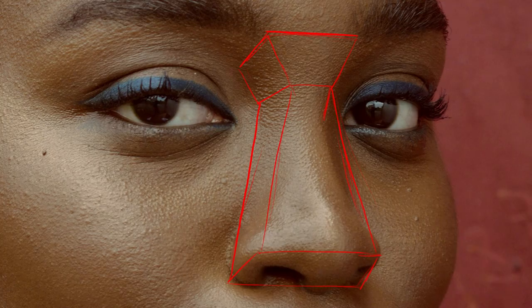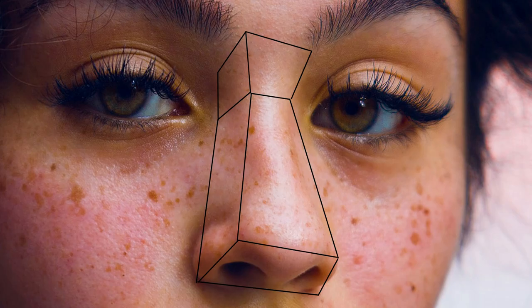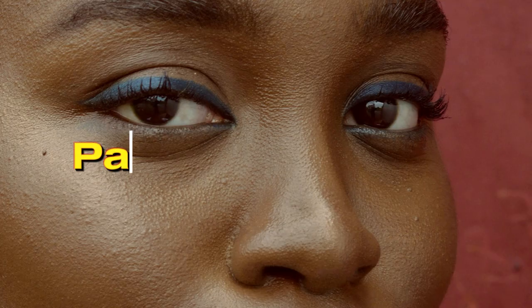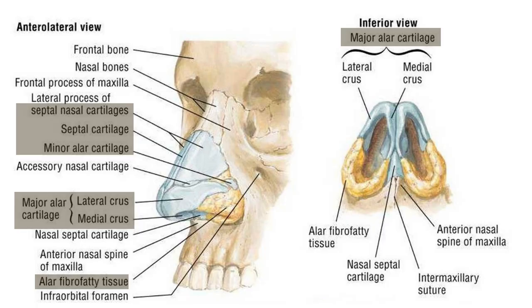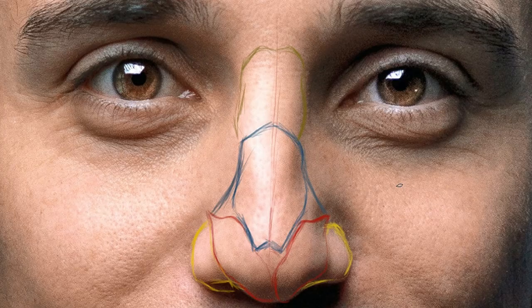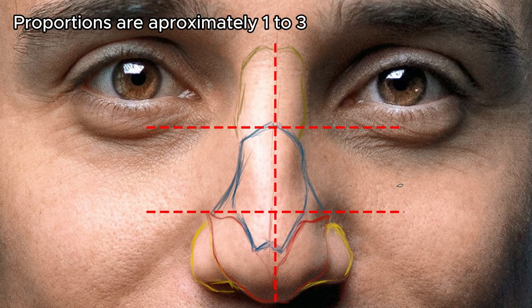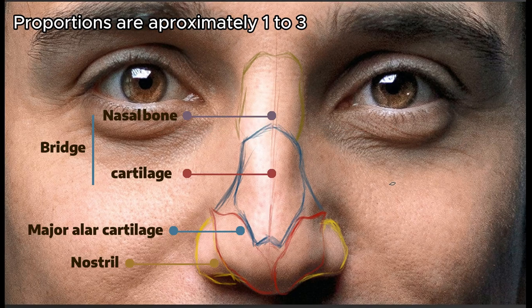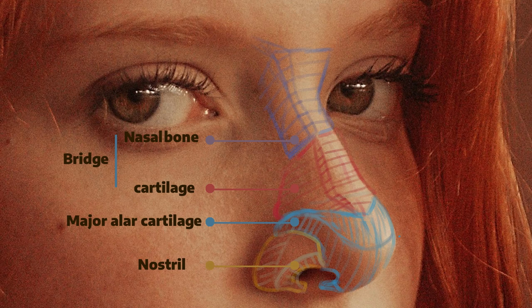Now that we've simplified the shape of the nose, let's move on to its different parts. The nose is made up of fat, cartilage, and bone. The fat is located in the nostrils. The nasal cartilage appears as a prism-like shape from the front, and the lower cartilage is located next to the nostrils, which are made of fat.